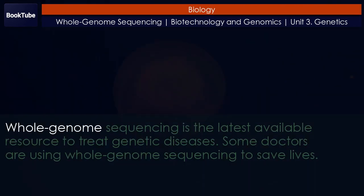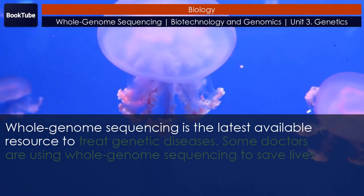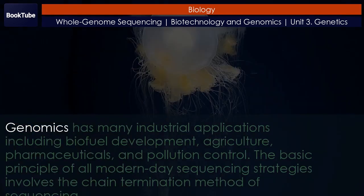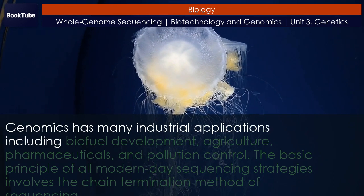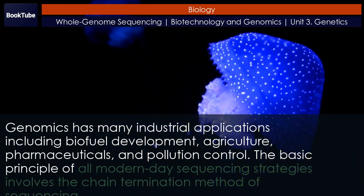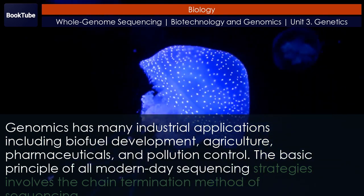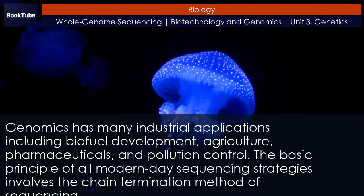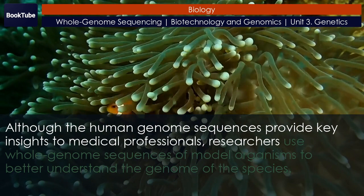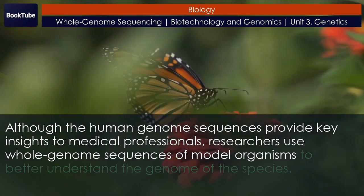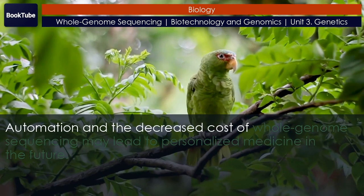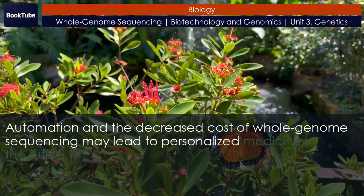Section Summary: Whole genome sequencing is the latest available resource to treat genetic diseases, and some doctors are using it to save lives. Genomics has many industrial applications including biofuel development, agriculture, pharmaceuticals, and pollution control. The basic principle of all modern-day sequencing strategies involves the chain termination method. Although human genome sequences provide key insights to medical professionals, researchers use whole genome sequences of model organisms to better understand the genome of the species. Automation and the decreased cost of whole genome sequencing may lead to personalized medicine in the future.